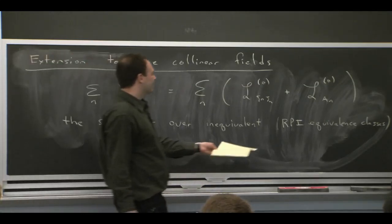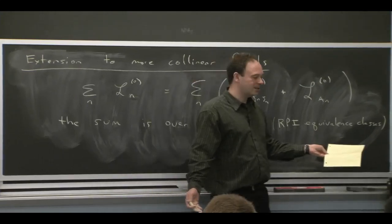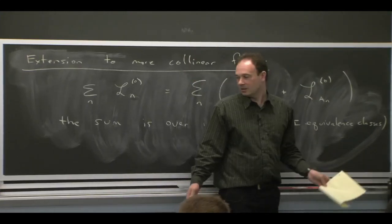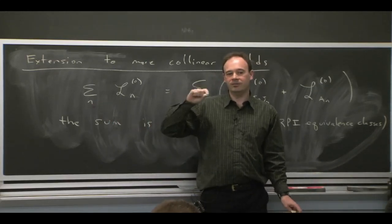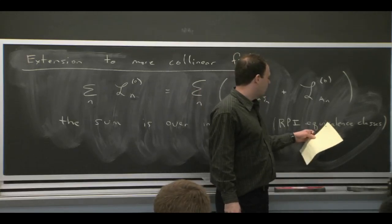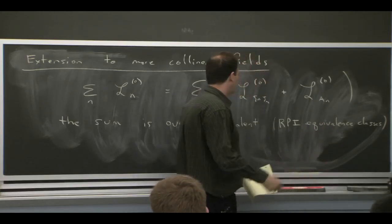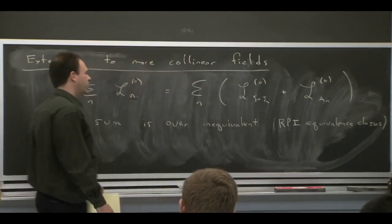So two n's are the same if they belong in an equivalence class that could be connected by reparameterization invariance. So you should think of the n's that I'm summing over here as just members, one of each class. They're kind of just picking out what that class is, just labeling it by one member. And then I sum over an inequivalent set.